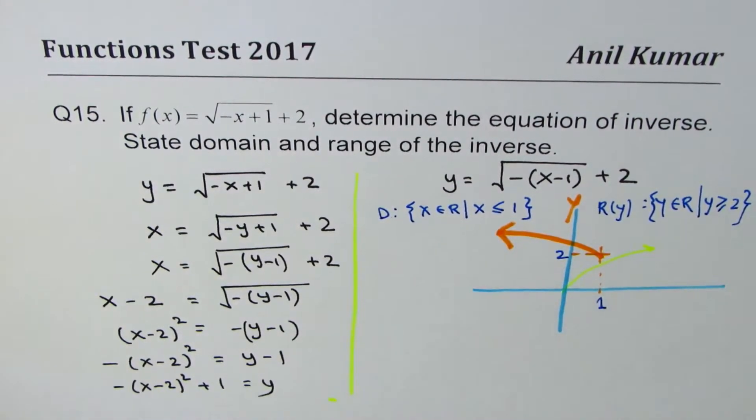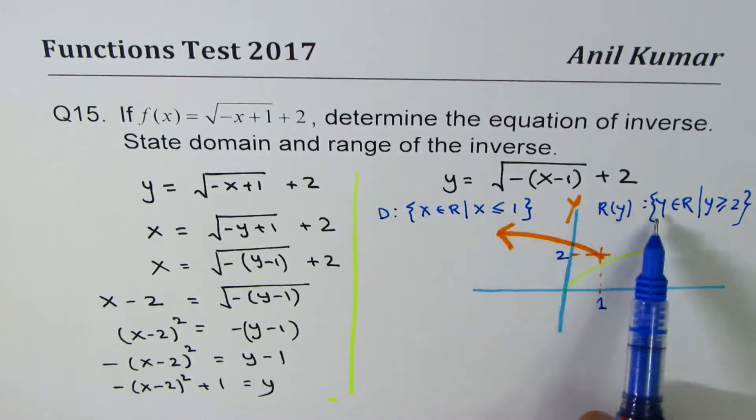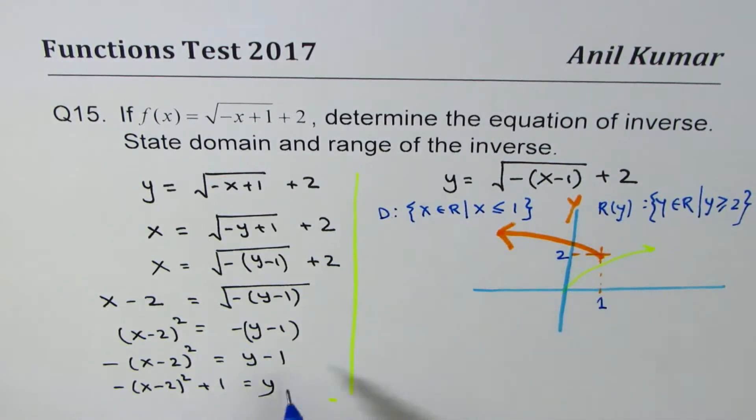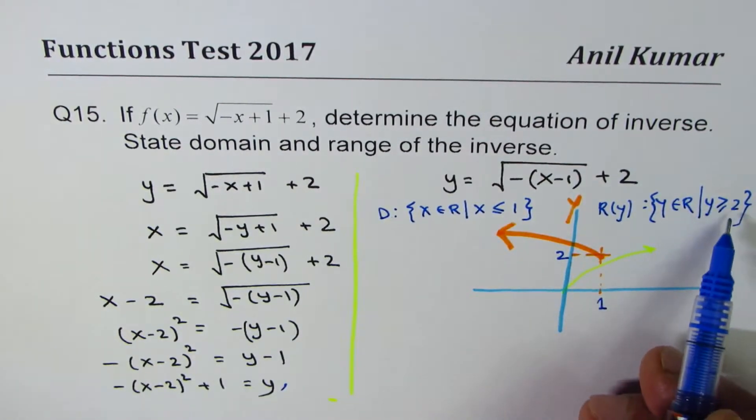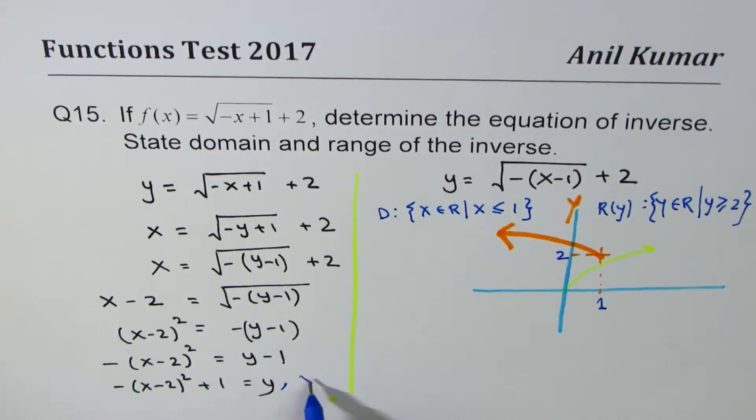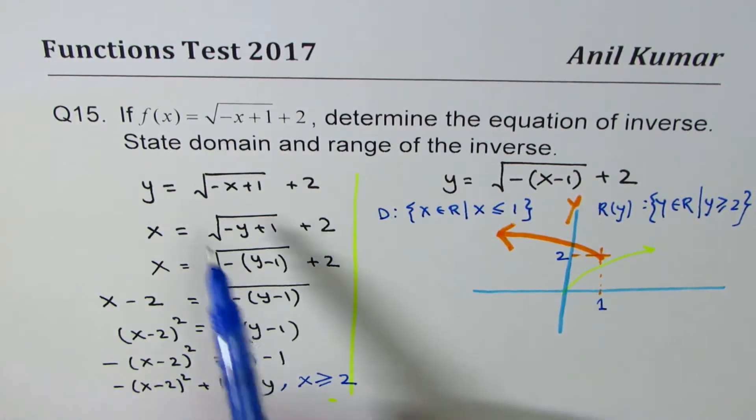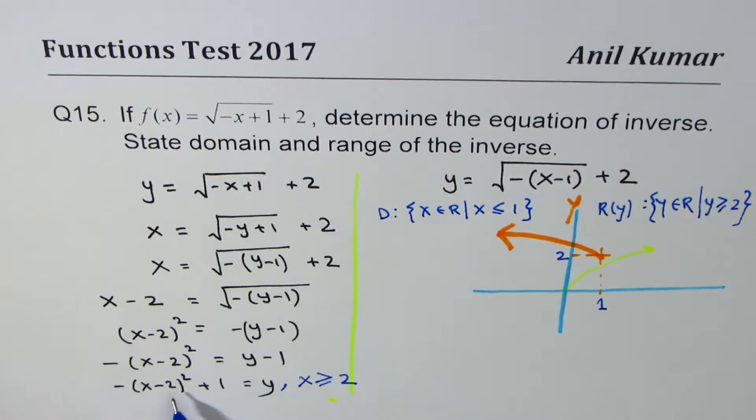Now, whenever you find inverse of the function, domain and range flip. So in this particular case, the range, which is y greater than equal to, becomes a restriction. So we have to write x is greater than equal to 2. So this parabola is now the inverse of square root function. Do you get my point? So when you find inverse, we have to take only one arm of the parabola, not both.